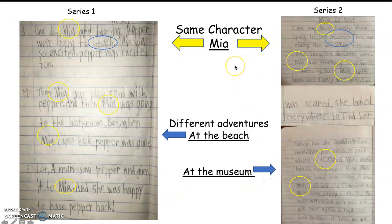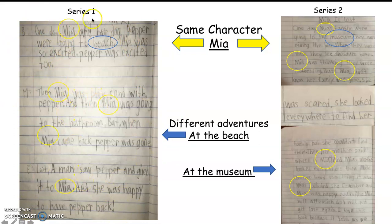Now I have an example from a student. He wrote two series books about the same character — his character's name was Mia. In the first series book, it's all about Mia and her dog Pepper. As you can see, Mia is mentioned all throughout the story. He didn't say 'one day I went and my dog Pepper' — he said 'Mia and her dog Pepper.' The whole story is about the character you chose, Mia. He then took the same name in series two, but instead of it being about Mia going to the beach, it's about Mia getting lost. You can see he used the same character — look at the yellow circles — it's all about Mia throughout the book. He did this correctly.